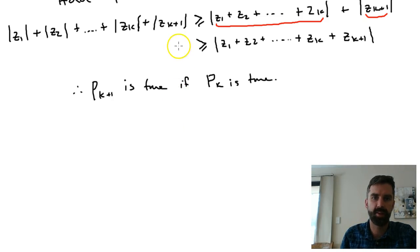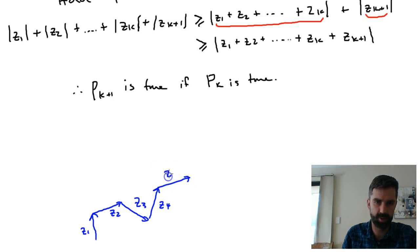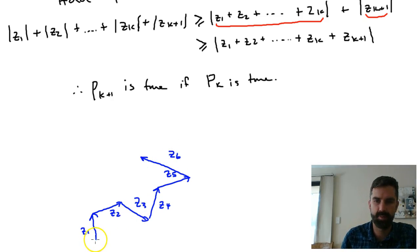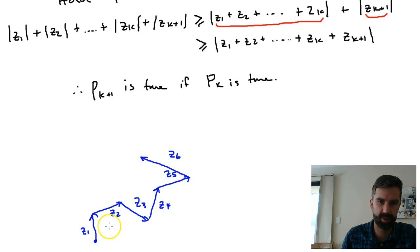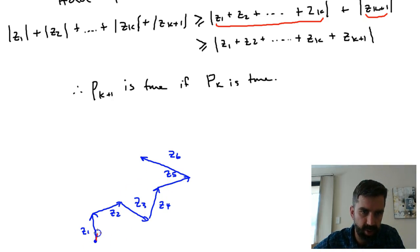Just one more thing — thinking about what this generalized inequality means. If you've got z1 and then you add on z2, then z3, then z4 and so on — say n equals 6 and we end up doing some path like this — what it's saying is if we take the modulus of each of these individually and add them up, so we take this entire long route from the starting point to the finishing point, that's going to be greater than or equal to just going straight from the start to the finish and taking the modulus of that.